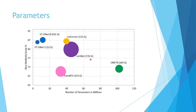This diagram plots the Dice similarity score against the number of parameters. As clearly visible, the VT-UNet, having the lowest number of parameters, achieves one of the best performances among all the models.